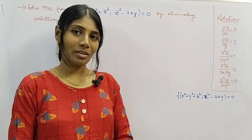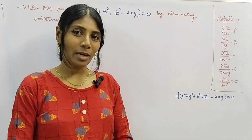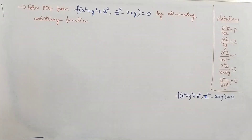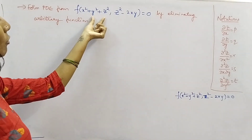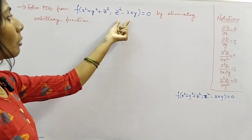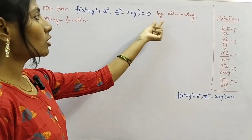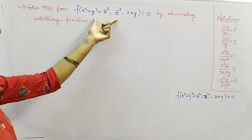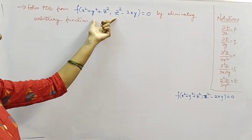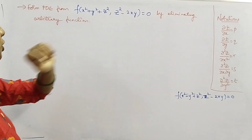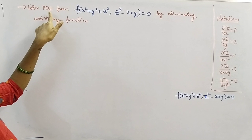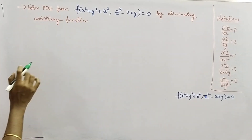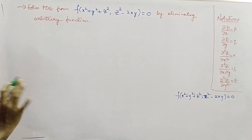Hello everyone, this is Kalpana here. In this video we're going to see a problem from partial differential equations. The problem is: form a partial differential equation from f(x² + y² + z², z² − 2xy) = 0 by eliminating the arbitrary function. We are given this relation and asked to form a PDE by eliminating the arbitrary function f.